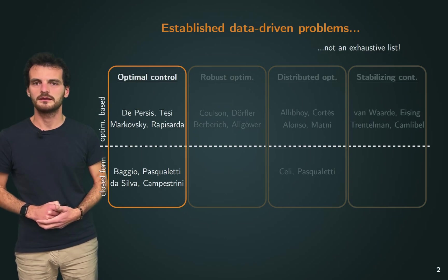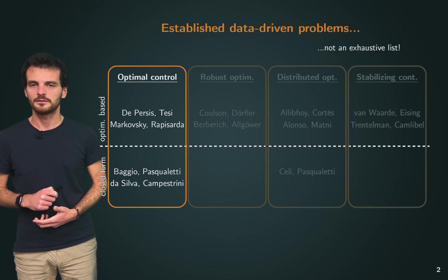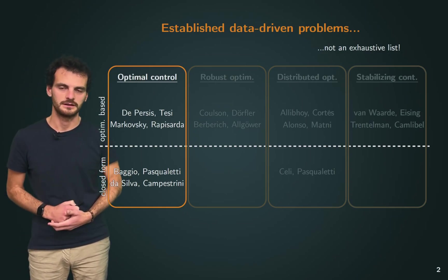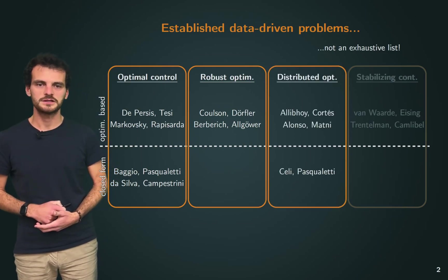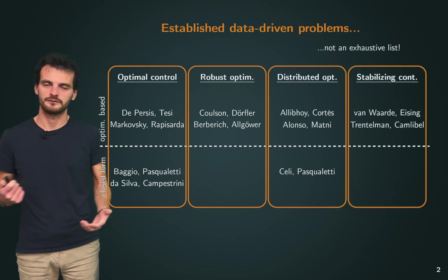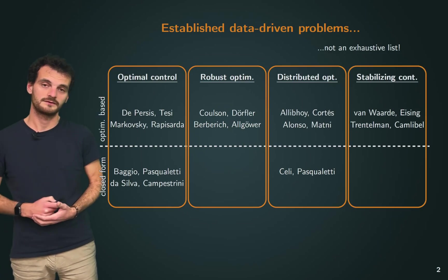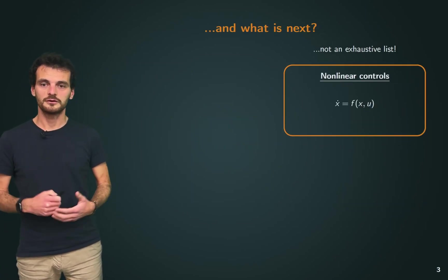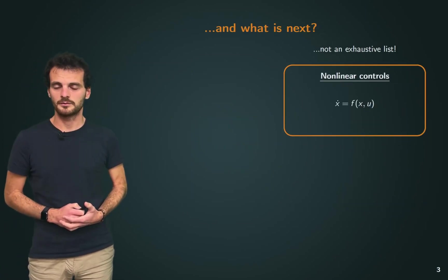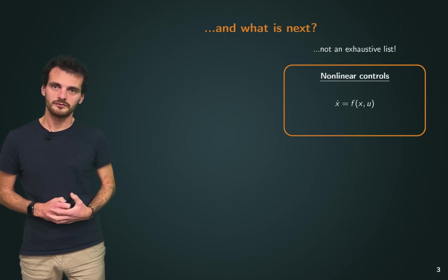Some of the problems that people have been looking at are optimal controls, such as traditional LQR, robust optimization, distributed optimization, and also the problem of studying stabilizing controllers. Of course, there are many other problems that we might want to solve with this framework.